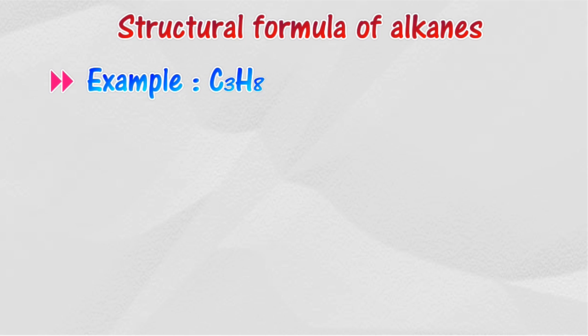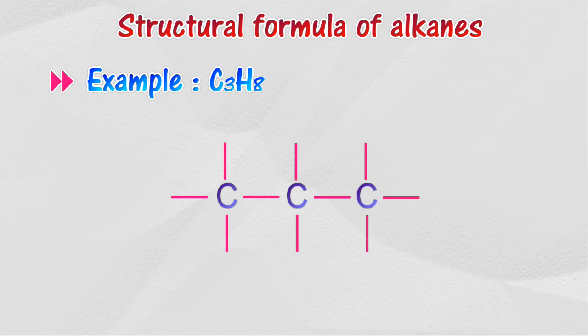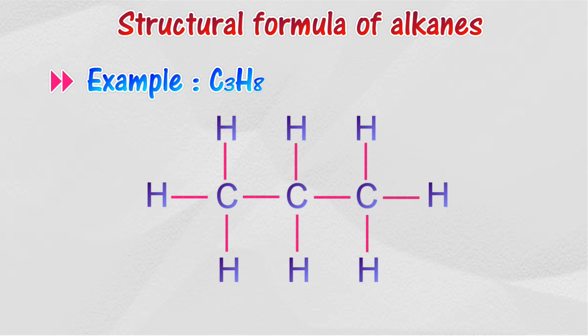The structural formula of alkanes can be drawn if the molecular formula is known. For example, given an alkane with a molecular formula C₃H₈: the first step is to draw all the carbon atoms in a straight line. The second step is to draw the single covalent bonds to connect all the carbon atoms. Next, draw additional single covalent bonds on each carbon atom, and make sure that each carbon atom has 4 single covalent bonds. Lastly, write the hydrogen atoms.